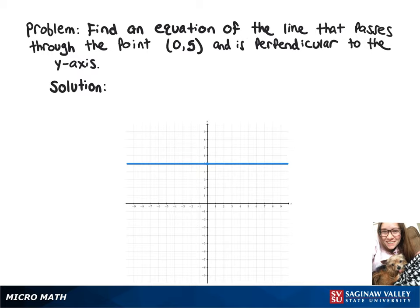We want to find an equation of the line that passes through (0, 5) and is perpendicular to the y-axis. So what that means is that when it passes through the y-axis, it will form a 90 degree angle. So that will give us a horizontal line, and the equation will be y equals 5.